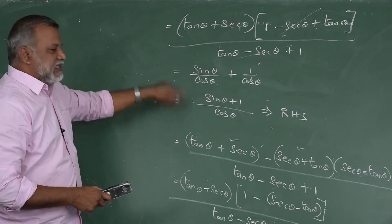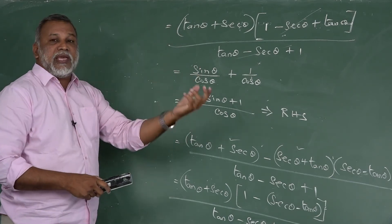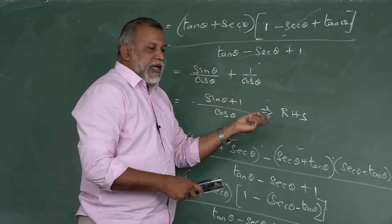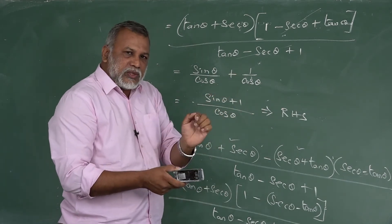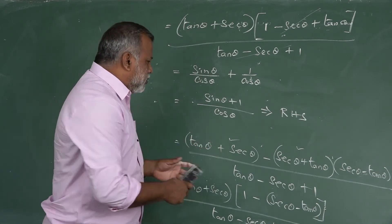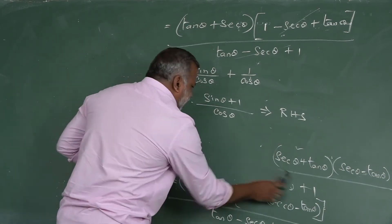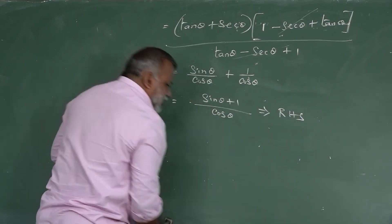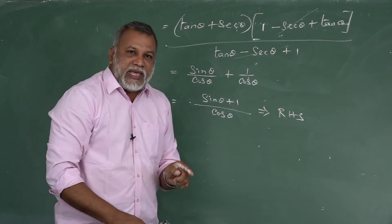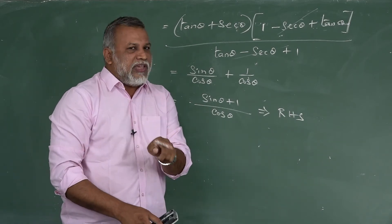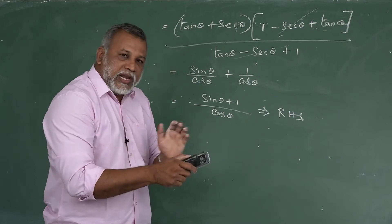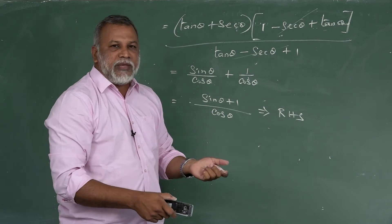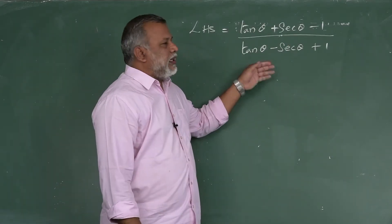In the LHS, the '1' was replaced by the identity sec²θ - tan²θ. Some students may ask: the denominator also has a '1', so can we replace it there instead? Yes, that is also possible — let me explain this alternative method.